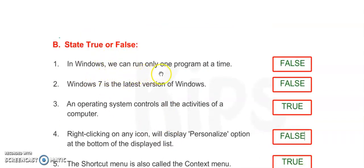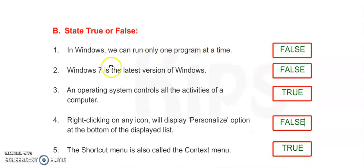In Windows, we can run only one program at a time. It is false. We can run many programs at a time. Number two: Windows 7 is the latest version of Windows. No, it is Windows 10, so it is false.